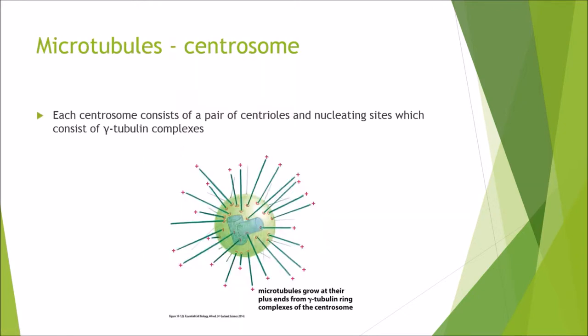Microtubules originate from somewhere called the centrosome. Each centrosome consists of a pair of centrioles, and around them are the nucleating sites which consist of gamma tubulin complexes. Microtubules grow by adding tubulin onto the positive end.